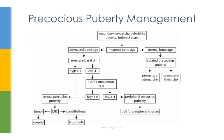Now let's talk about what happens if you measure their bone age and find an advanced bone age. Now you know they either have central or peripheral precocious puberty. To differentiate, you want to measure their LH. Central precocious puberty is due to premature activation of the HPG axis. Patients with central precocious puberty will have a high level of basal LH, and if you measure it and see it's high, you automatically know they have central precocious puberty.